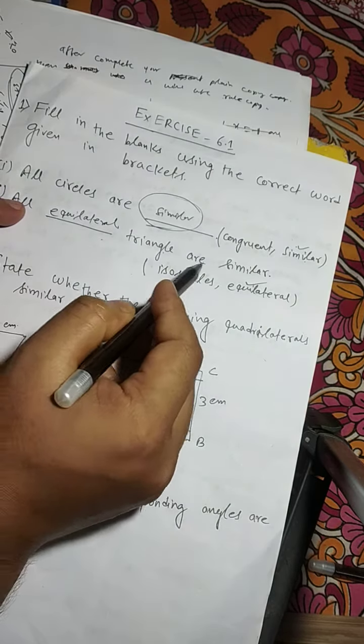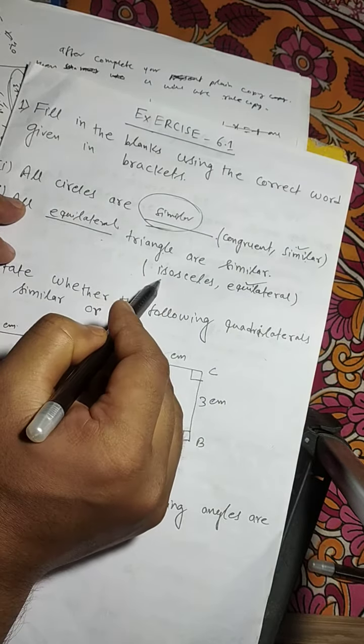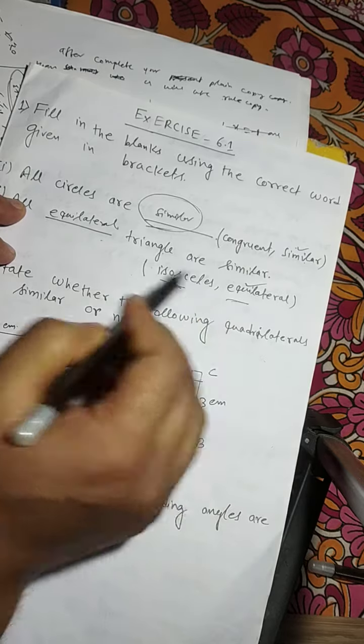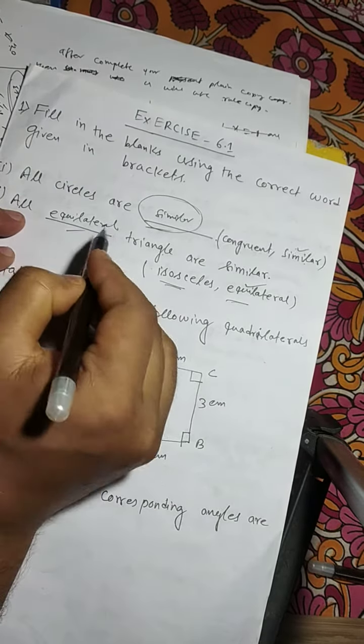All ___ triangles are similar - isosceles or equilateral? The answer is equilateral.